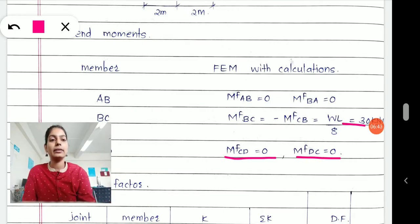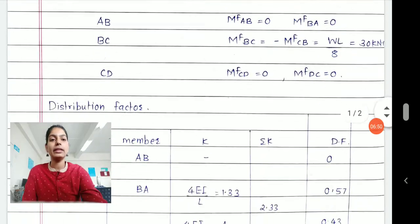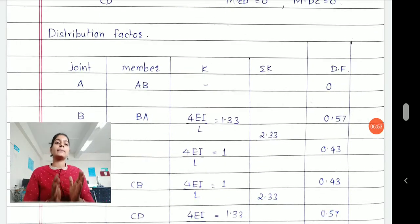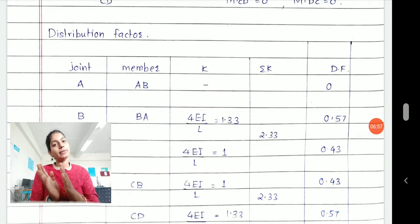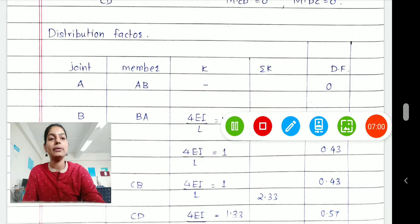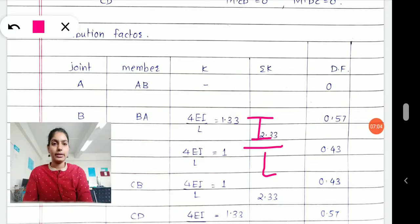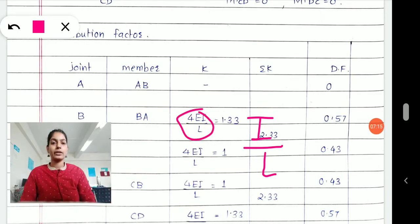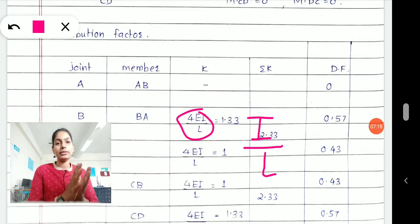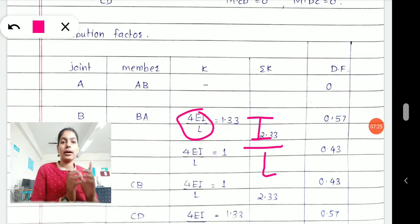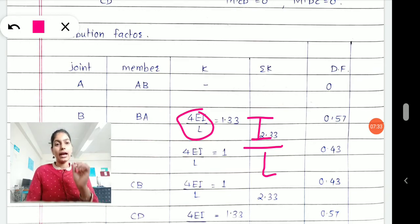Once you calculate the fixed end moments, the very next task is to calculate the distribution factor. When calculating the distribution factor for beams, we applied one method where K equals I/L. But there are two approaches: some books use I/L as the stiffness factor K, whereas some use 4EI/L as the stiffness factor. I have chosen this frame with the second approach using 4EI/L and 3EI/L.